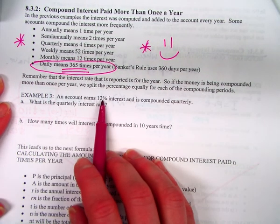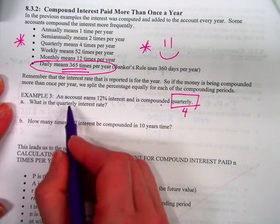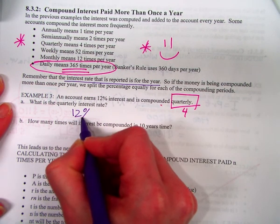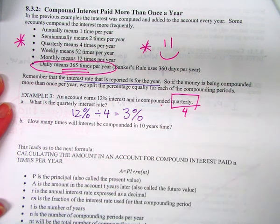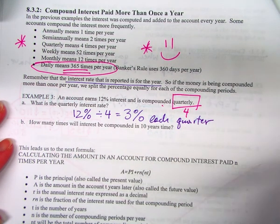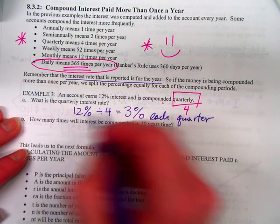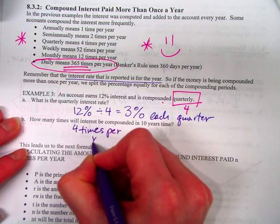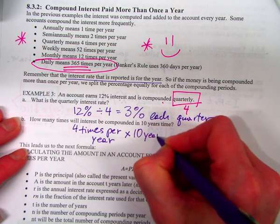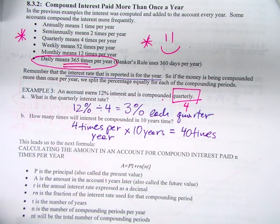So, an account earns 12% interest and is compounded quarterly. So, what number am I thinking of here? Four. So, here's what you have. What is the quarterly interest rate? So, what that means, the 12%, that is the interest rate reported for the year. So, what you would do here is 12% divided by four, which means it's 3% each quarter. How many times will the interest be compounded in 10 years' time? So, it's quarterly. So, that means four times per year. So, each year, four times. For how many years? 10. So, we multiplied by the 10 years. And what's the final answer? Four times 10. It would be compounded 40 times.